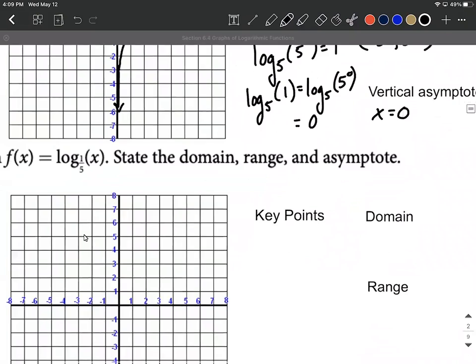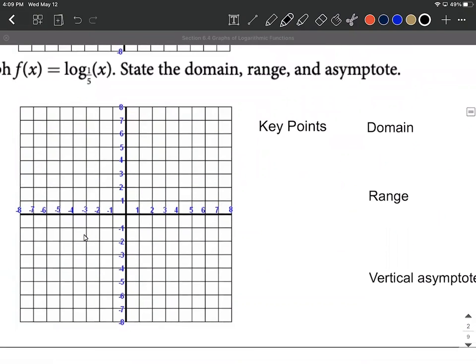Next, let's move on to log base 1/5 of x. Now you could use for the key points 1/5 comma 1 and 1 comma 0. But there's one additional key point that I like to use whenever our base here is between 0 and 1, and that key point is use its reciprocal. So the reciprocal, instead of 1 over 5, we're going to go 5 over 1, which is equivalent to 5 comma negative 1. So I'm going to use these two key points, the 1, 0 and the 5 comma negative 1.